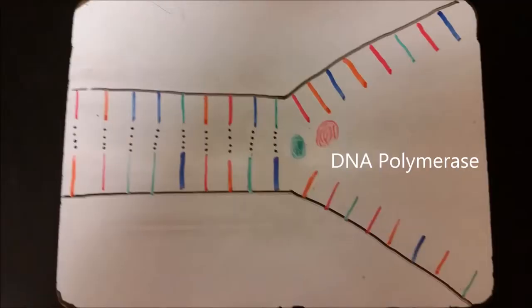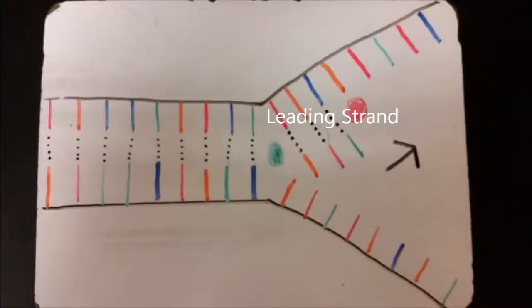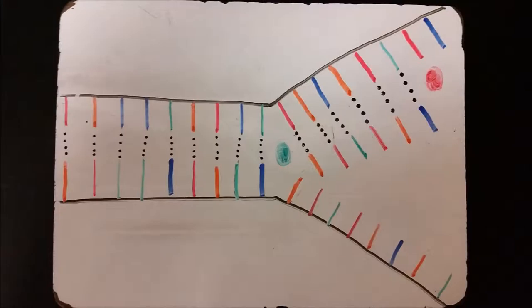Once the DNA is split, the DNA polymerase adds nitrogenous bases to the leading strand. The polymerase gets the nitrogenous bases from within the nucleus and pairs them with the corresponding pairs.